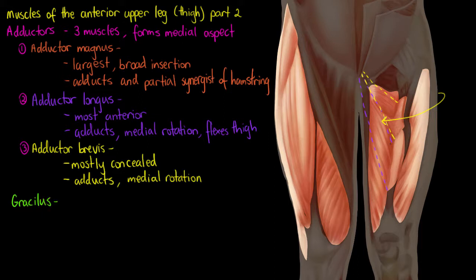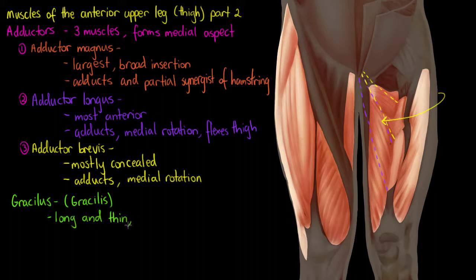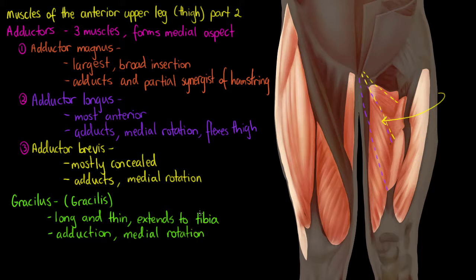We're going to do a couple more muscles before finishing this video. The first is our gracilis — you might see it spelled differently depending on your textbook. The gracilis is a very long and thin muscle, extending all the way from the superior portion at its origin right down to your tibia, the large bone of your lower leg. Again, we're going to have adduction and medial rotation — by this point you can almost tell what a muscle does just by looking at where it begins and ends.